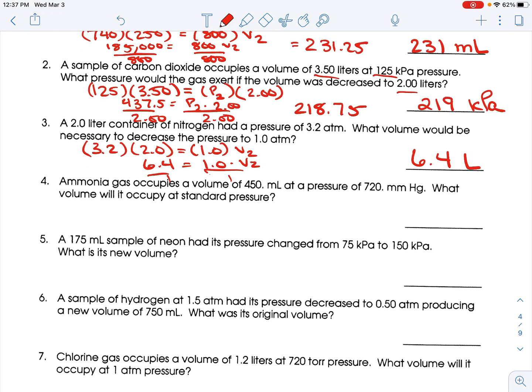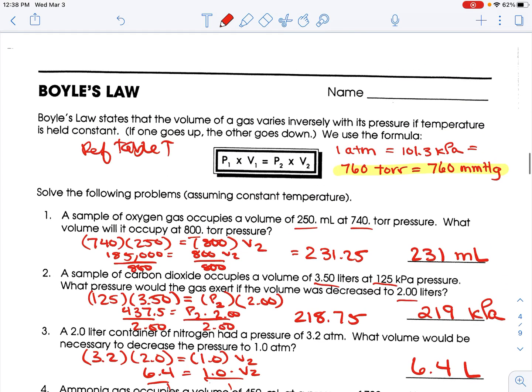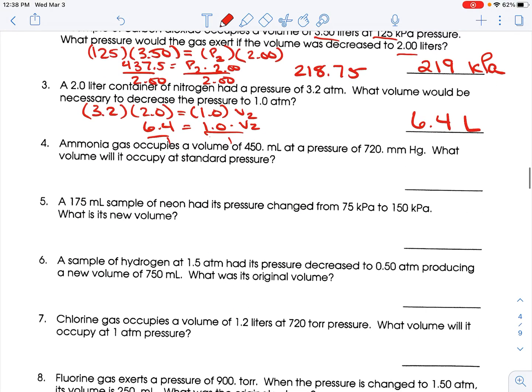Ammonia gas occupies a volume of 450 milliliters at a pressure of 720 millimeters of mercury. What volume will it occupy at standard pressure? Oh, sneaky. These are all standards. So, they're looking for 760 in this case. So, we have 720 times 450 equals 760 times, I don't know.